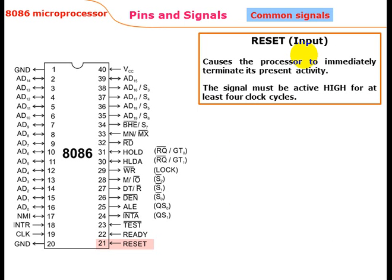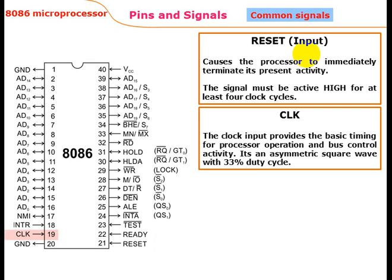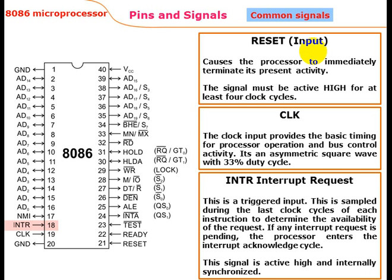RESET input causes the processor to immediately terminate its present activity. The signal must be active high for at least four clock cycles. CLK is the clock input — it provides the base timing for processor operation and bus control activity; it is an asymmetric square wave with a 33% duty cycle.